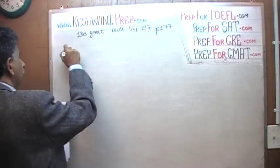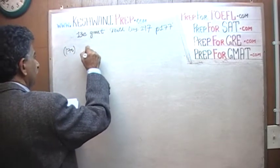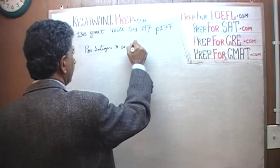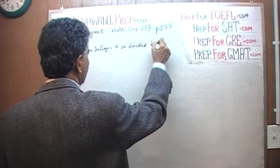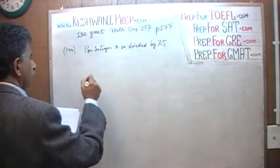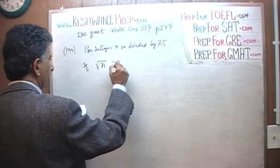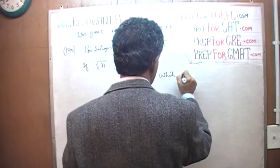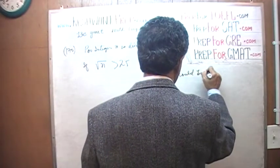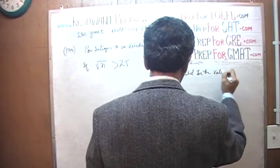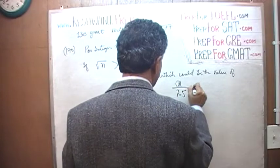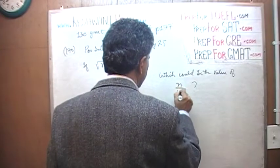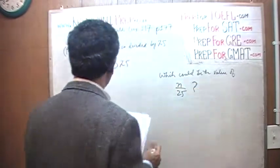In the next problem, we are told that the positive integer n is divided by 25. We are told that if square root of n is greater than 25, then which of the following could be the value of n divided by 25? Well, here's what's going on.